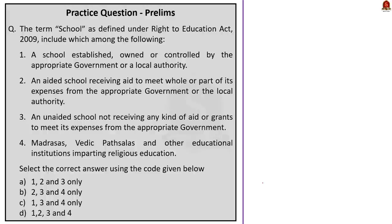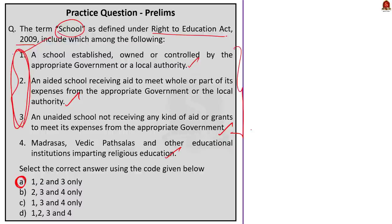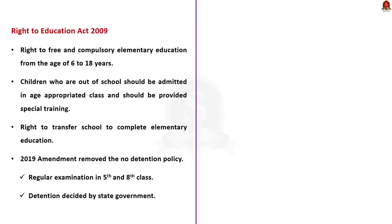The final question: which of the following are included in the term 'school' as defined under the Right to Education Act 2009? Options include: (1) a school established, owned, or controlled by the appropriate government or local authority; (2) an aided school receiving aid to meet whole or part of its expenses from appropriate government or local authority; (3) an unaided school not receiving any aid or grants; (4) Madrasas, Vedic Pathshalas, and other educational institutions imparting religious education. The correct answer is option A — 1, 2 and 3 only. The RTE Act aims to provide free and compulsory education to all children aged 6 to 14 years. Key features include provision of elementary education free of charge.